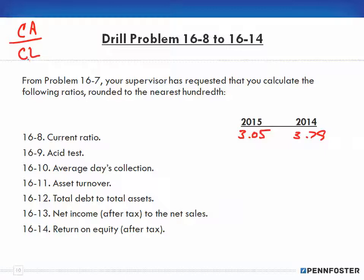Remember, the current ratio is looking at liquidity — do I have enough current assets that I can convert to cash quickly in order to pay off my current liabilities? We're not talking about long-term liabilities; we're talking about current ones like accounts payable and notes payable, not mortgages. As you can see, we had three times as many assets as liabilities for both years, so we're in good shape.